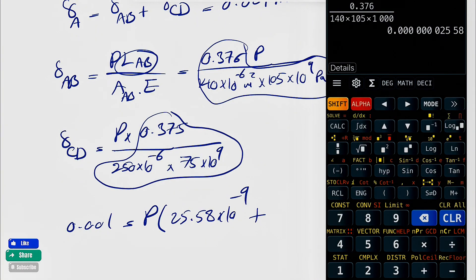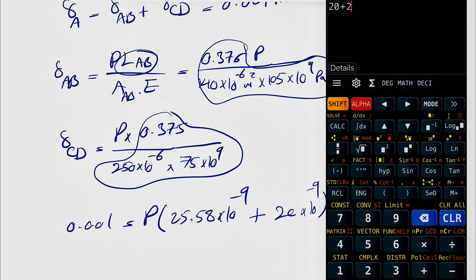So the first one would be basically 25.58 times 10 to the minus 9. Let's see what we get from the second one. We have 375 this time, 250 times 72 times 1000.